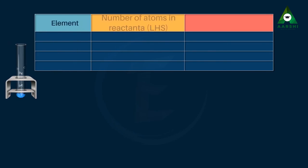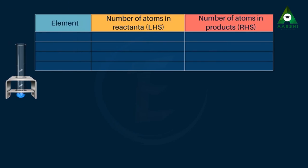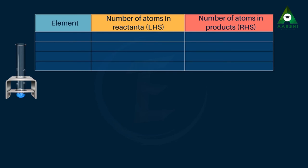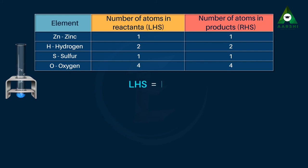Now, let us look at the number of atoms of each element on LHS and RHS. Element — Number of atoms in reactants (LHS) — Number of atoms in products (RHS): Zn (zinc): 1, 1. H (hydrogen): 2, 2. S (sulphur): 1, 1. O (oxygen): 4, 4. As you can see, the number of atoms of each element on LHS and RHS are the same. Therefore, this chemical equation is a balanced equation.